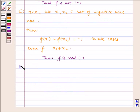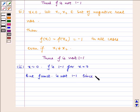Now the third case: x equals 0. f is one-to-one for x equals 0, but the function is not one-to-one since we have proved it is not one-to-one.